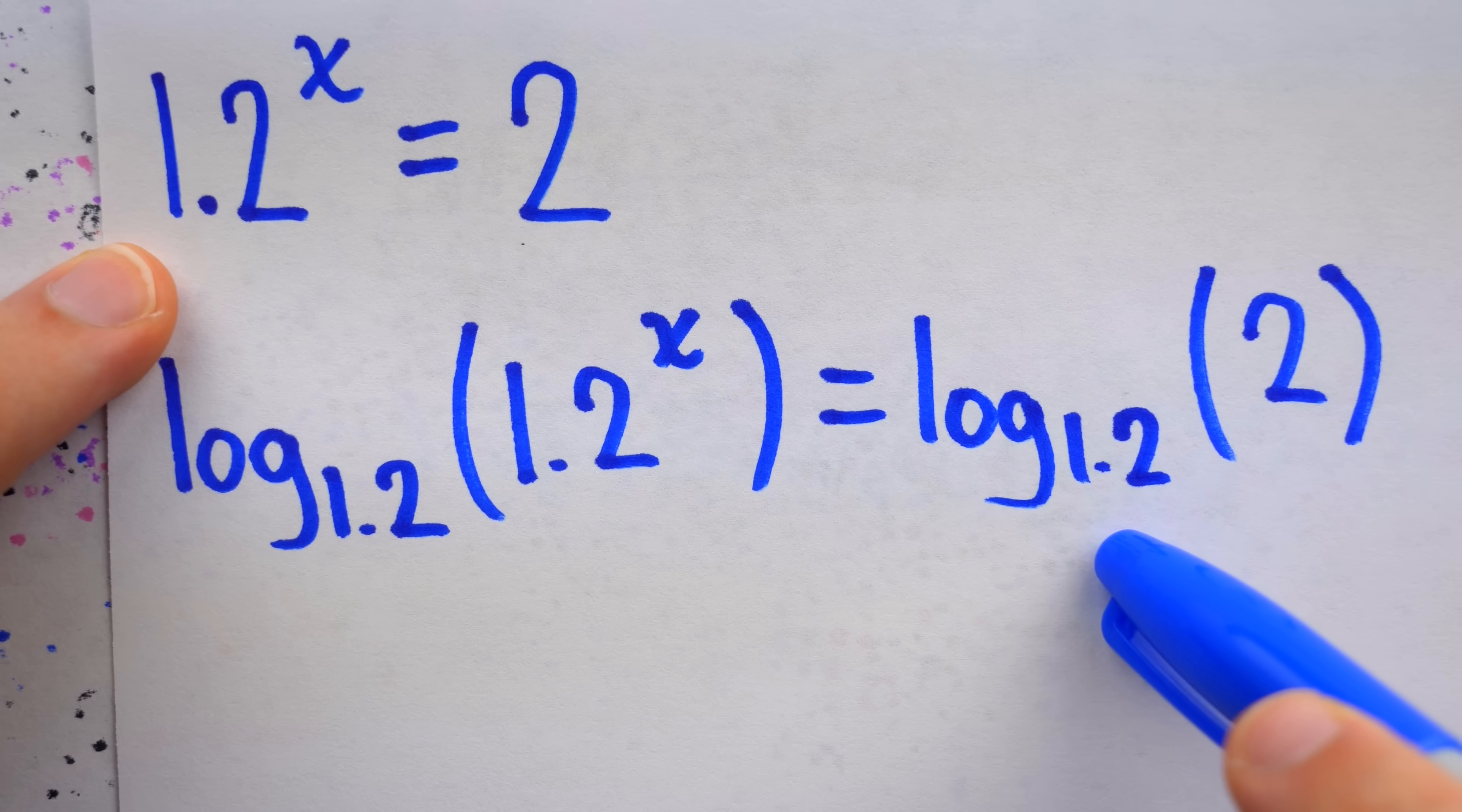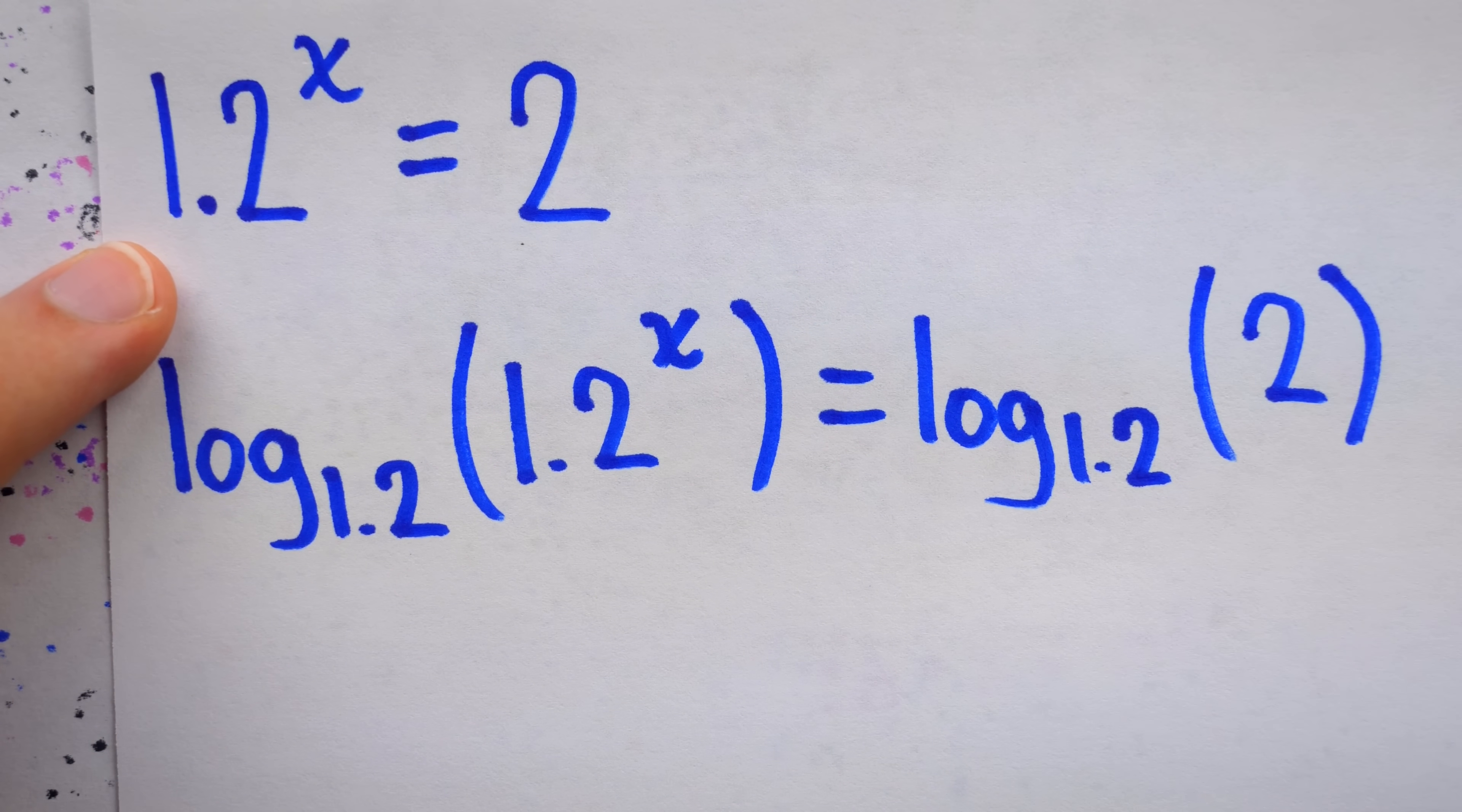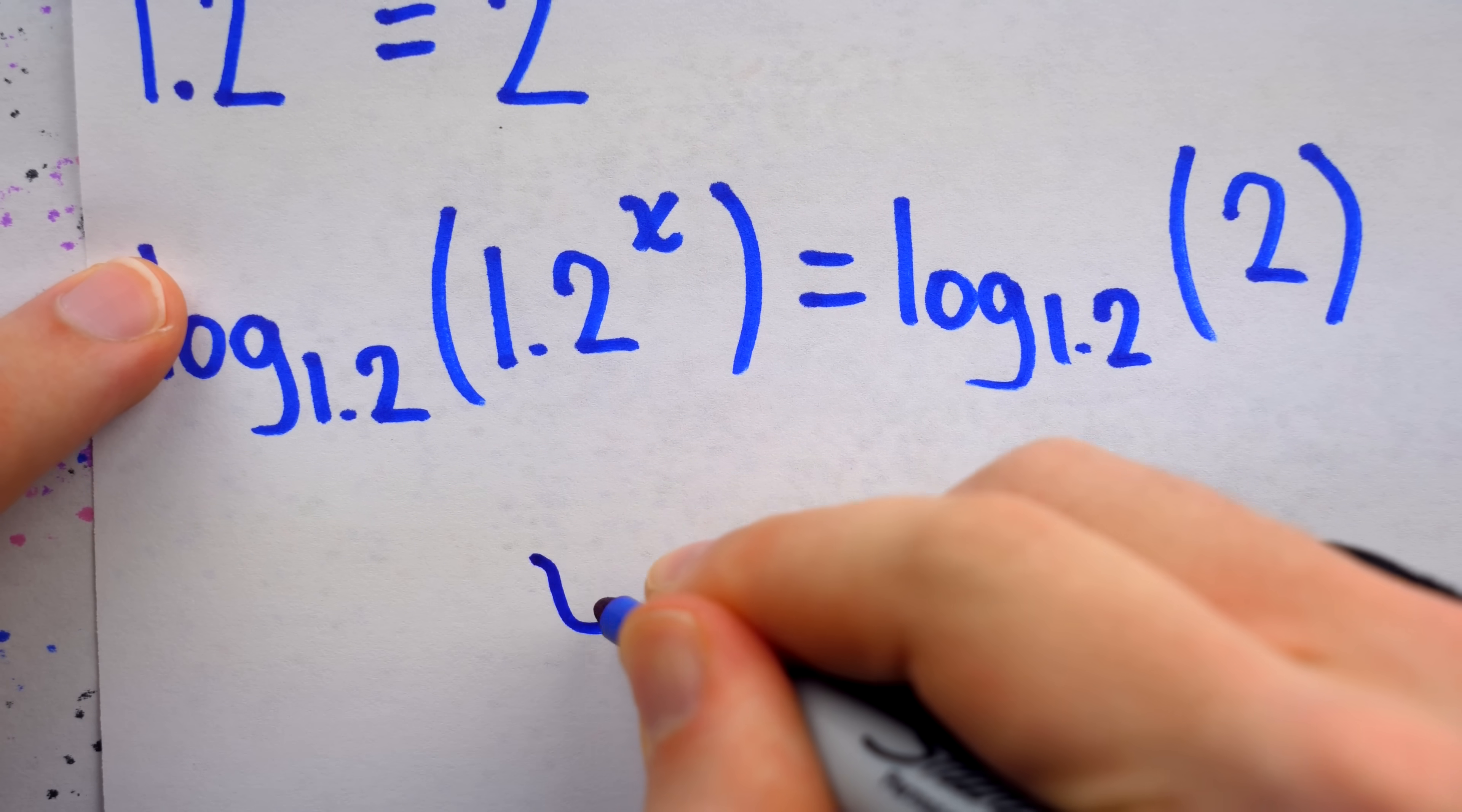In each case, it will produce the exponent that a base of 1.2 requires to get the input. Of course, a base of 1.2 requires an exponent of x to get this input. So on the left, it just cancels out and gives us x.